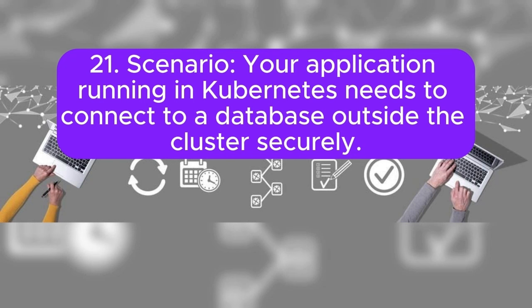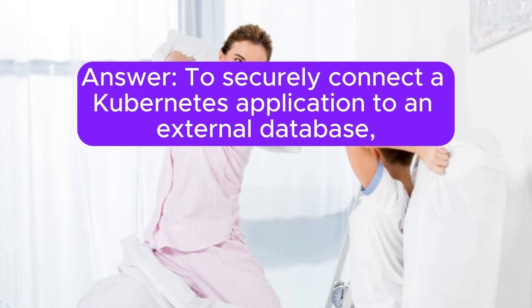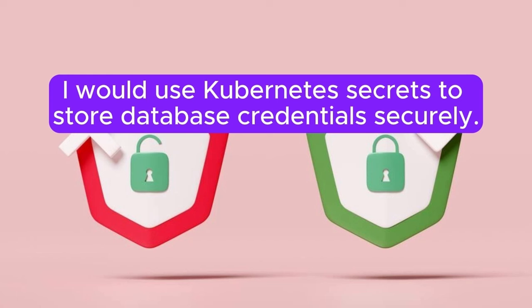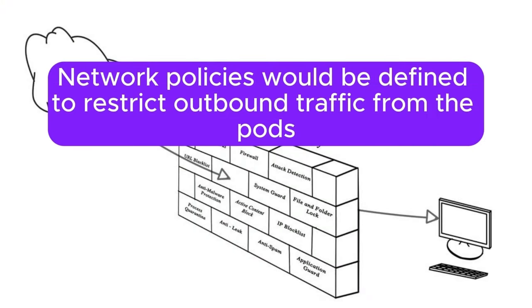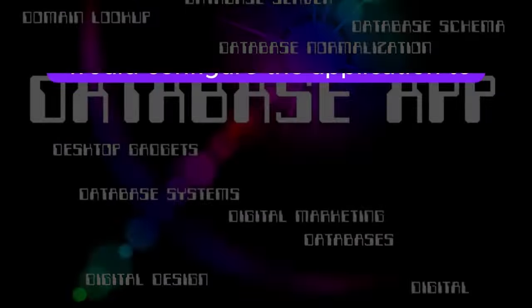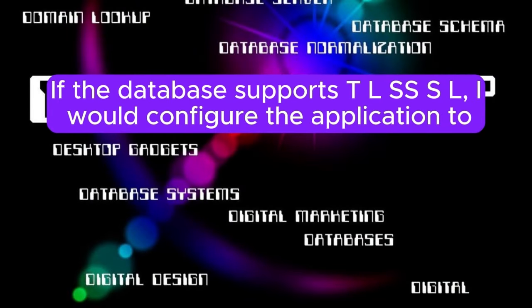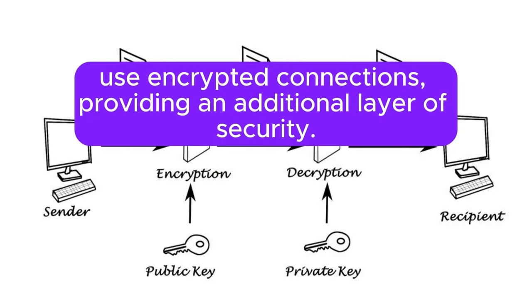Scenario 21: Your application running in Kubernetes needs to connect to a database outside the cluster securely. How would you configure Kubernetes to handle this? Answer: To securely connect a Kubernetes application to an external database, I would use Kubernetes secrets to store database credentials. The application pods would be configured to access these secrets as environment variables or mounted files. Network policies would be defined to restrict outbound traffic from the pods to only the external database IP or hostname, ensuring secure communication. If the database supports TLS/SSL, I would configure the application to use encrypted connections, providing an additional layer of security.